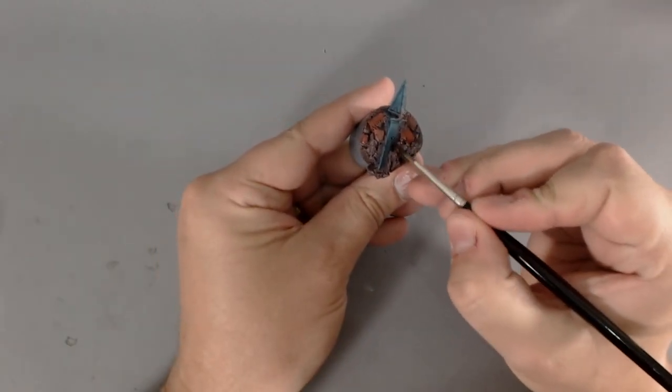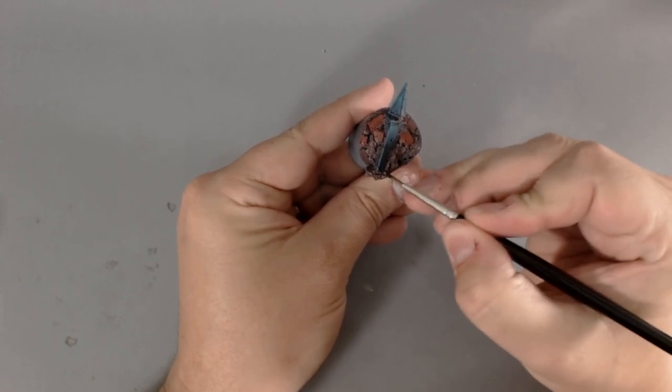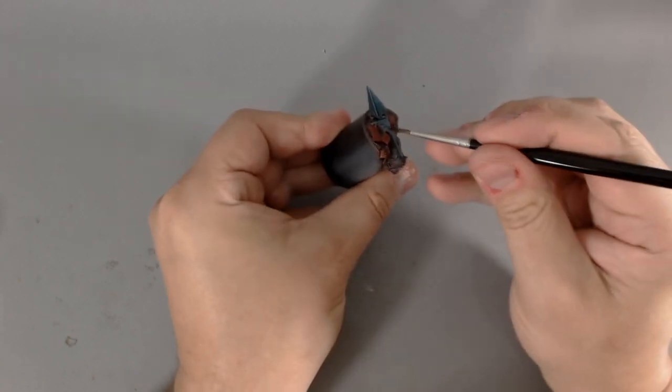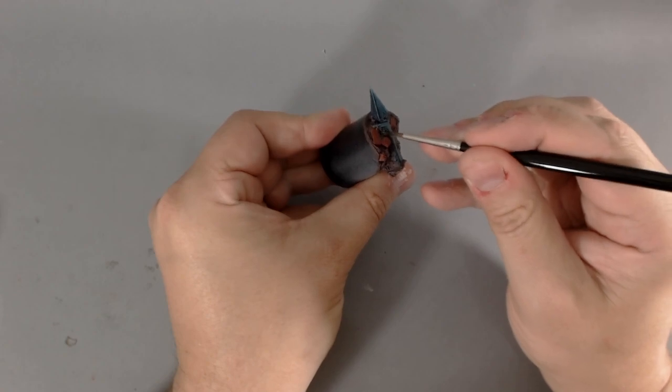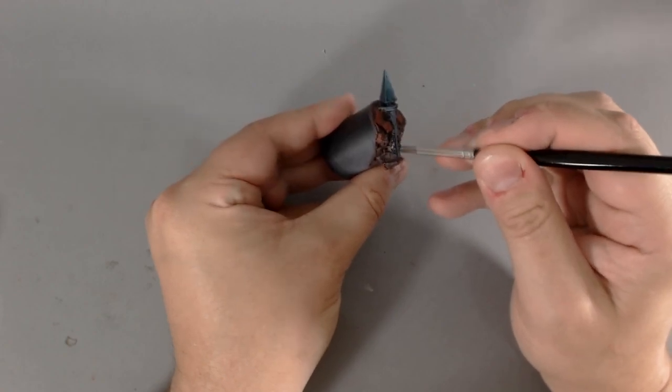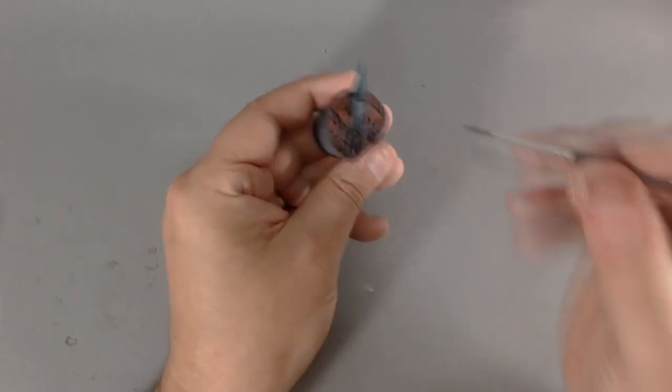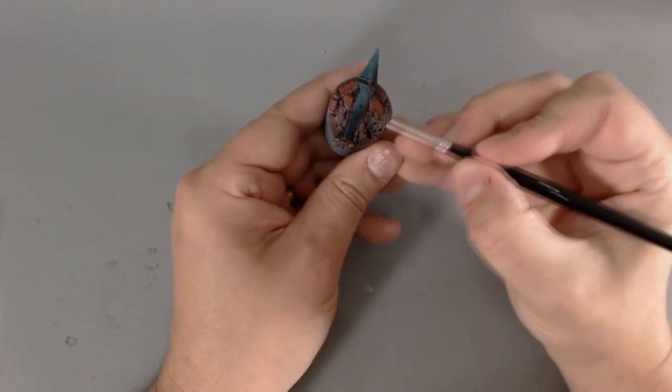And that'll be thinned down to two to one, and we just apply that to the wall end just to darken it a bit.